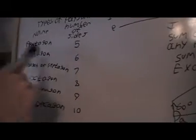So here are the names of different polygons. Five sides is a pentagon, six sides is a hexagon, seven sides is a heptagon or a septagon, eight sides is an octagon, nine sides is a nonagon, ten sides is a decagon.